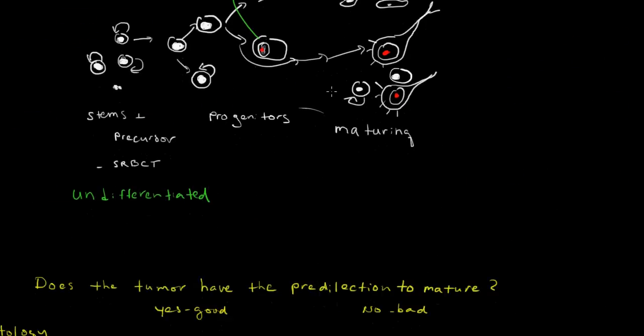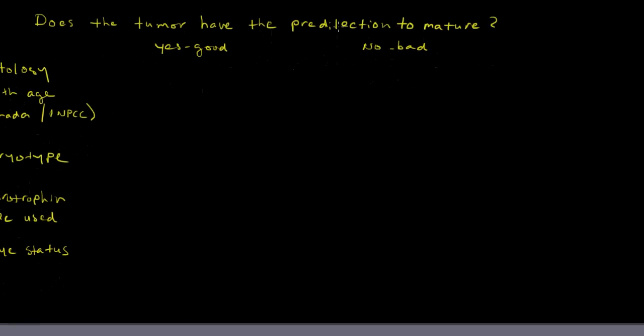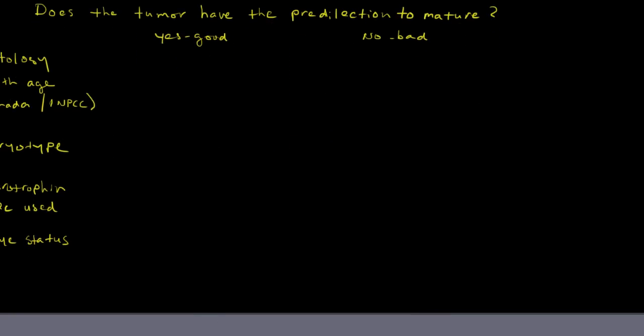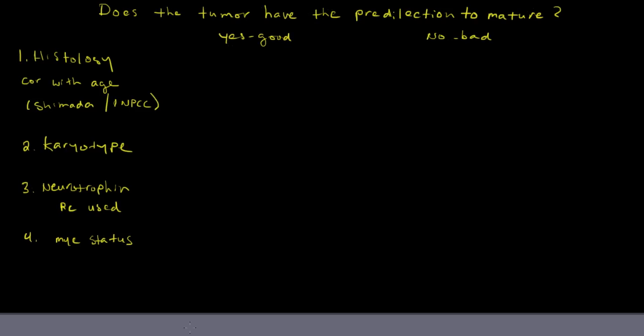But then, when Dr. Shimada talks, he's very open about the fact that as he's trying to prognosticate these tumors, the real question that he's asking is, does the tumor have the predilection to mature? Is this a tumor that's intractably a small round blue cell that will never grow up? Or might it be that with increasing age of the patient, the tumor actually may not be such a primitive immature tumor, might acquire some maturation?